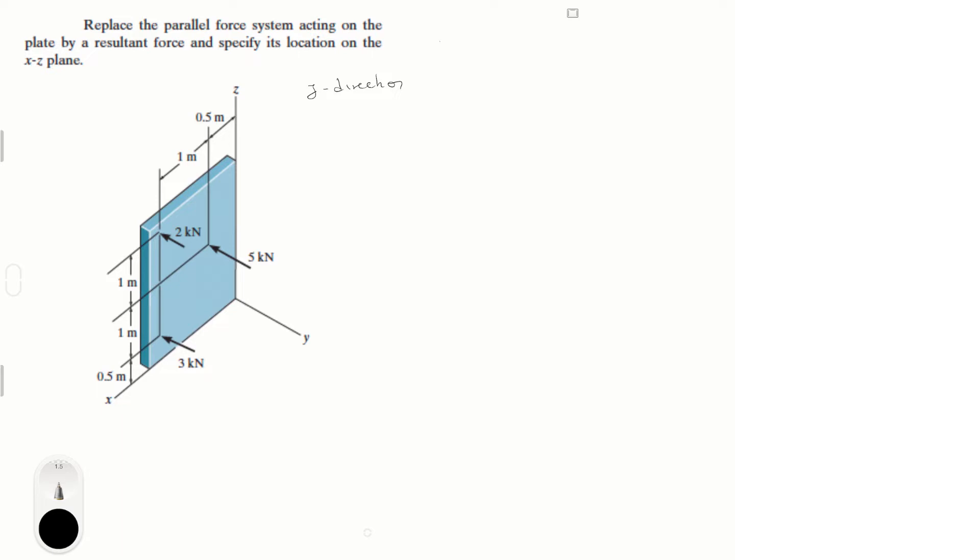That being said, the first step is always finding the sum of the forces, which is the sum of the forces in y, because that's all we have, and it's equal to minus 2k, minus 5k, minus 3k, which is all equal to minus 10k in the j direction. Sum of the forces in y.